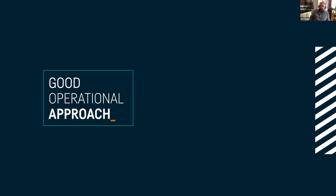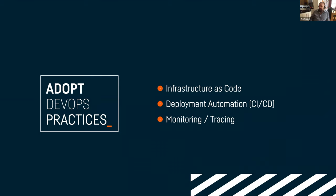Let's talk now about operational approach. The main guidance for avoiding uncertainty in operations is to adopt DevOps practices. We've been using the word DevOps since we set up The Scale Factory 11 years ago, and it's still not very clear to everybody what it means — in part because there's no DevOps manifesto the way there was an Agile manifesto, so it means different things to different people.